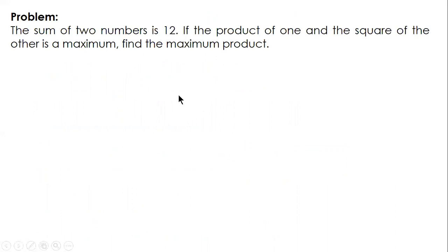Here's a simple problem: The sum of two numbers is 12. If the product of one number and the square of the other number is a maximum, find the maximum product.